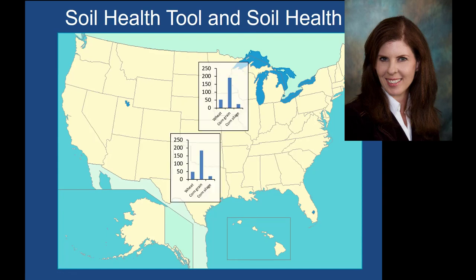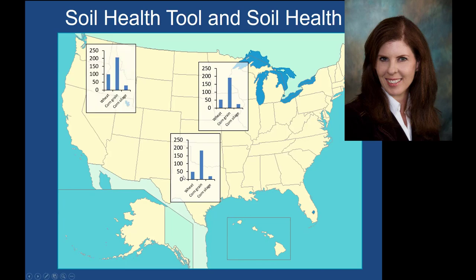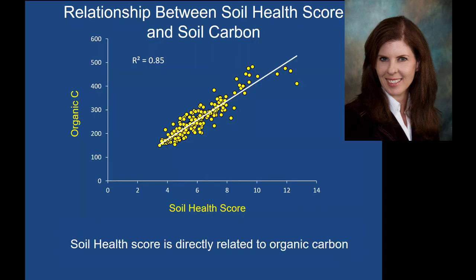But one of the things we always look at is production. Looking at production in the Midwest for wheat, corn grain, and corn silage, and comparing to Texas where the test was developed and to Idaho, even though our soils tend to score low on the soil health scale, we tend to be just as productive or more productive for a lot of the major crops than areas where you would typically find higher scores. One of the main reasons is that the soil health score is really directly related to soil carbon.